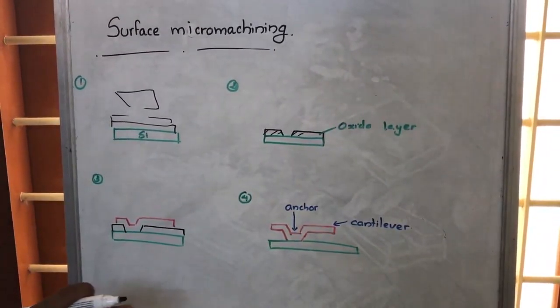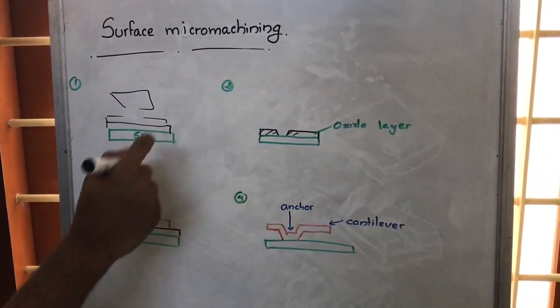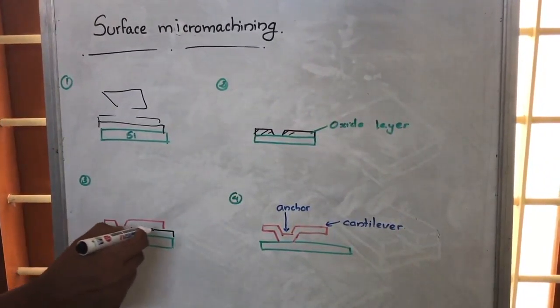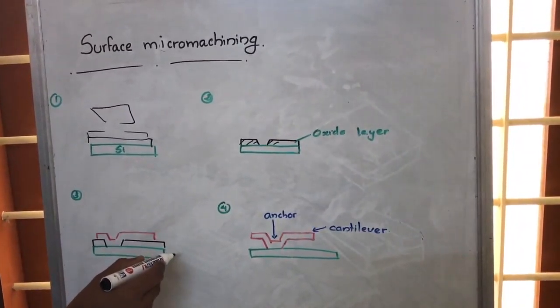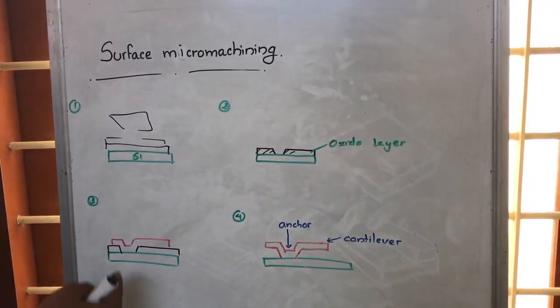What we do is over this particular block, we will be placing a polysilicon layer. So this one is the polysilicon layer. In the polysilicon layer too, we will be using some patterns to make a structure like this.